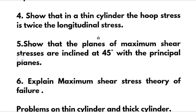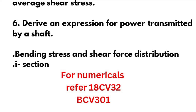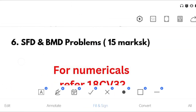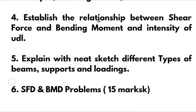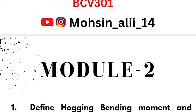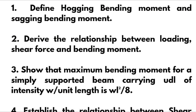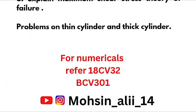My suggestion is to go through thin cylinder and thick cylinder problems — they are easier ones — and also column problems as a second option. From Module 3, if you are not comfortable with the problems, you can skip them. But for Module 2, SFD and BMD problems are very necessary. Module 2, Module 4, and Module 5 problems are simpler, and Module 1 problems are also easier. Cover the numerical parts of these four modules and you can easily pass this subject in the first attempt. I wish you all the best for your examinations. Please share this video with all your friends and batch mates. Thank you.